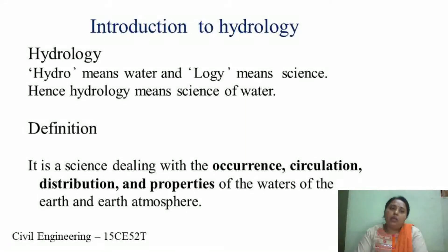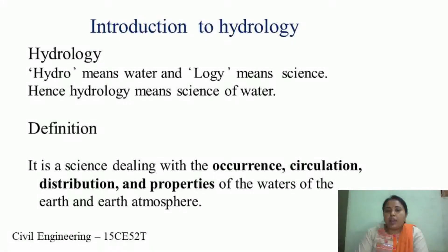What do we mean by hydrology? Why should we study hydrology? Hydrology is basically derived from the Greek word: 'hydro' means water and 'logy' means science. Hence hydrology means the science of water. To be more specific, it is a science dealing with the occurrence, circulation, distribution and properties of the waters of the earth and earth atmosphere. It is also defined as the scientific study of earth's water, especially with relation to the effects of precipitation and evaporation upon its occurrence and character of water in streams, lakes and on or below the land surface.